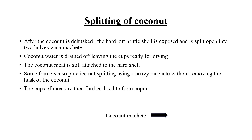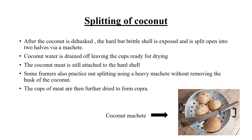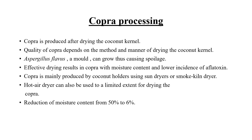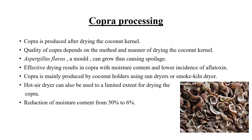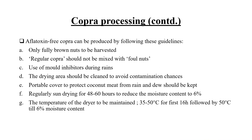The splitting of coconut is done with the help of a coconut machete. The coconut meat remains attached to the hard shell even after splitting, and the coconut water is drained off leaving the cups ready for drying. Copra is produced after drying the coconut kernel. If not dried properly, a mold called Aspergillus flavus can grow on the copra, causing spoilage and rendering it unsuitable for human consumption. A drastic change in moisture content from 50% to 6% is observed, and aflatoxin-free copra can then be produced. Aflatoxin is an anti-nutritional factor which limits the activity of certain nutrients in the human body, so it must be removed for effective absorption.